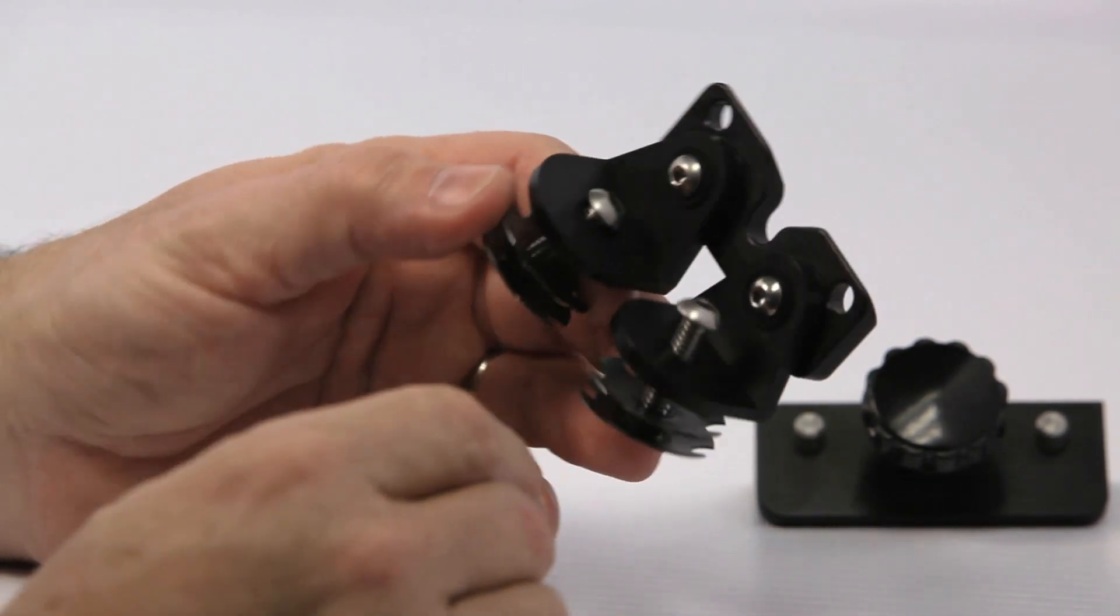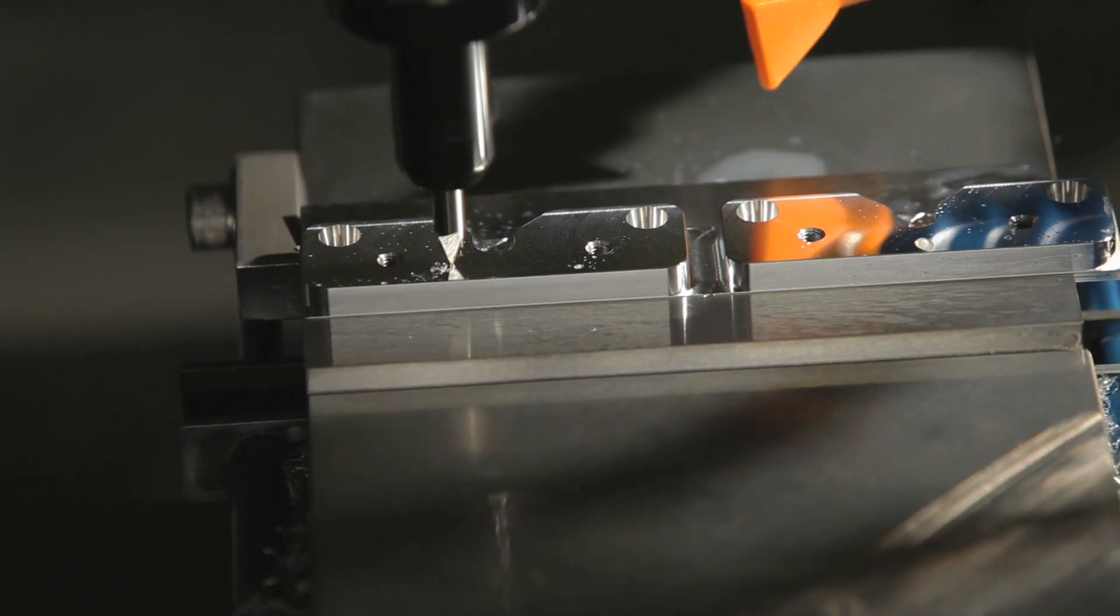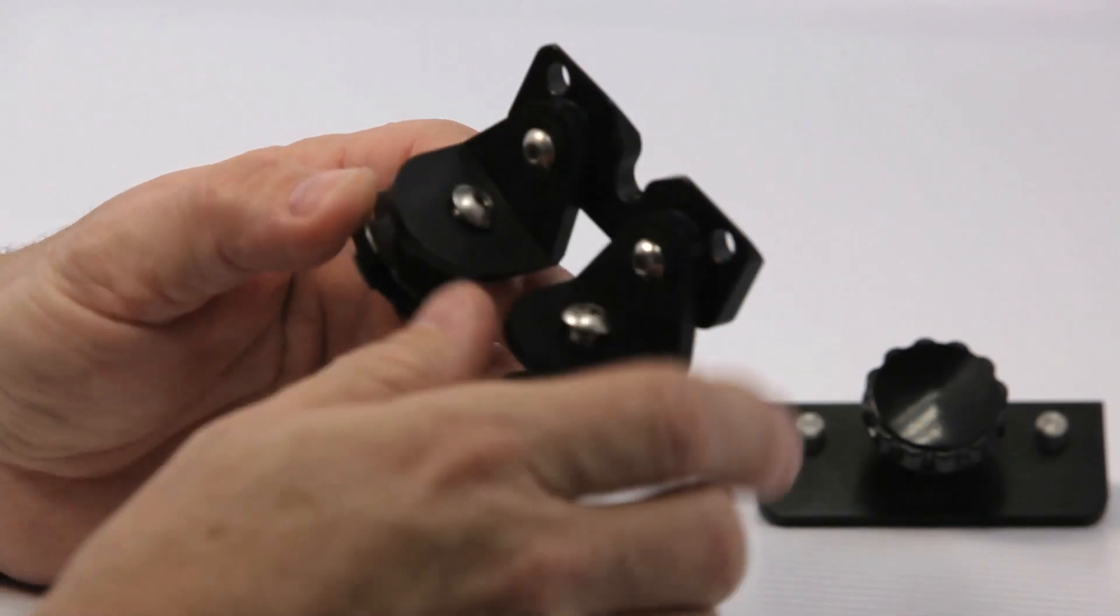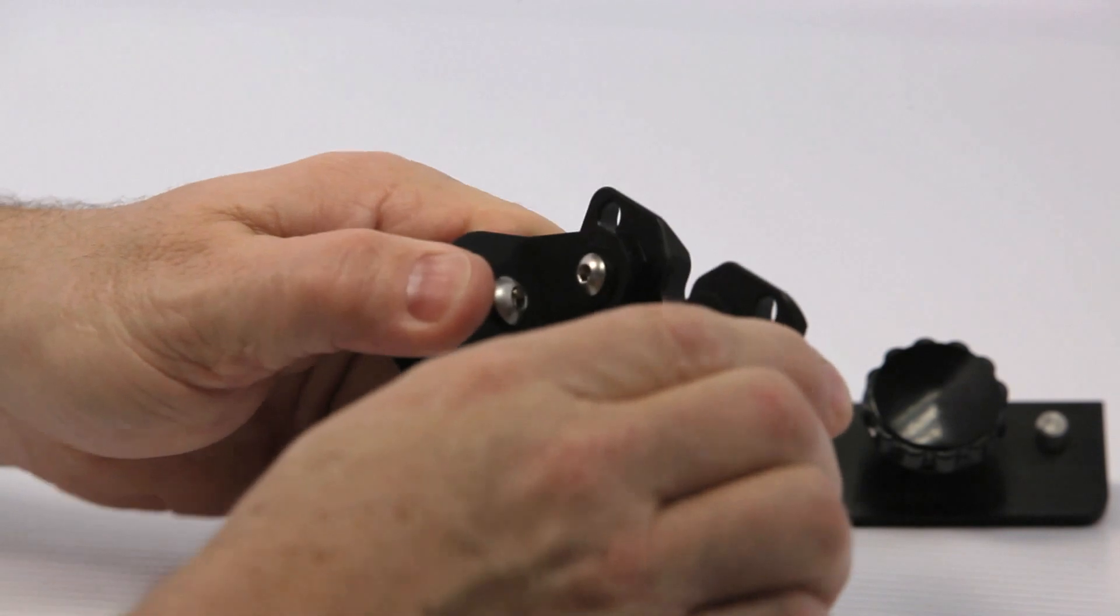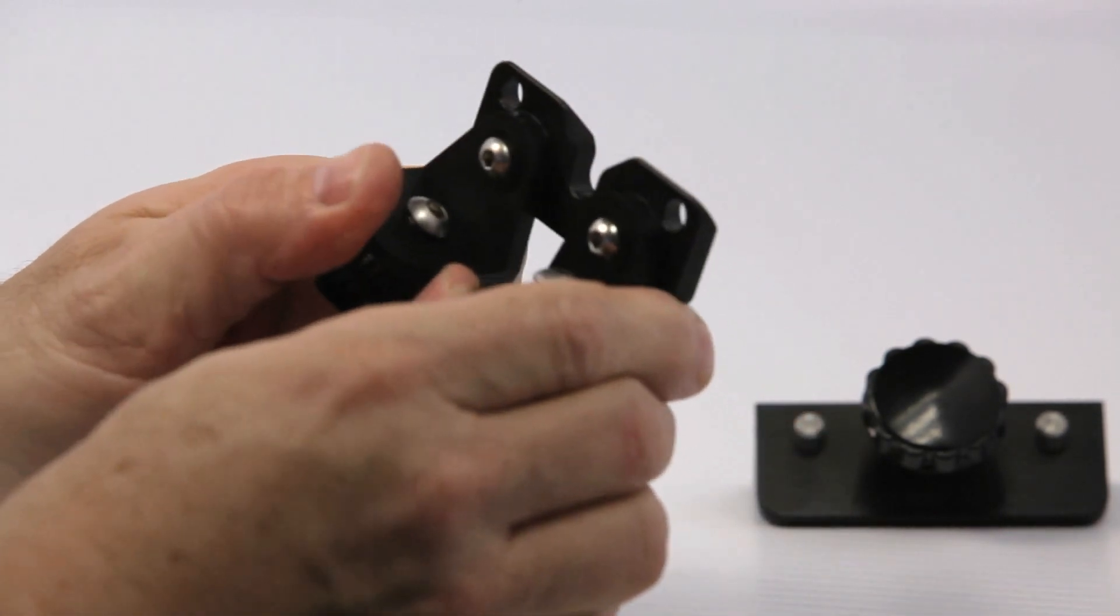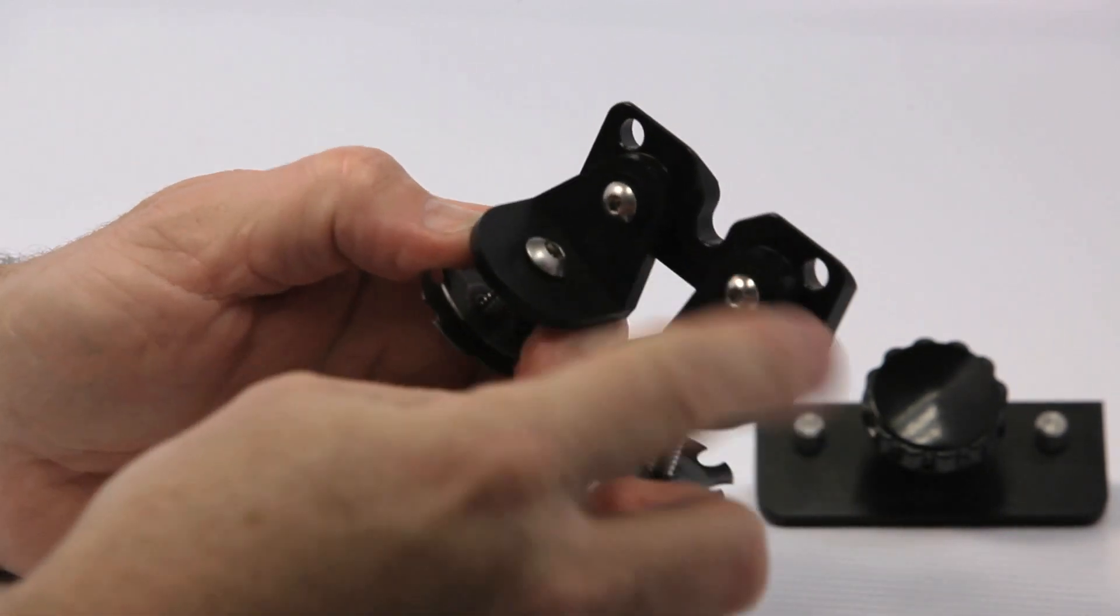And besides that, we have a few Delrin washers. They're black Delrin washers at every wear point. So when these parts move, they're rigid and well supported with a plastic bearing.